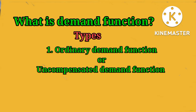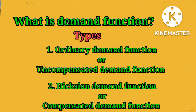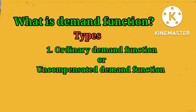One is the ordinary demand function, which is known as the Marshallian demand function, and the second one is the compensated demand function, which is otherwise known as the Hicksian demand function. In today's lecture we'll discuss the mathematical derivation of the ordinary, or Marshallian, demand function. The Marshallian demand function is a demand function that maximizes utility with given prices and money income.